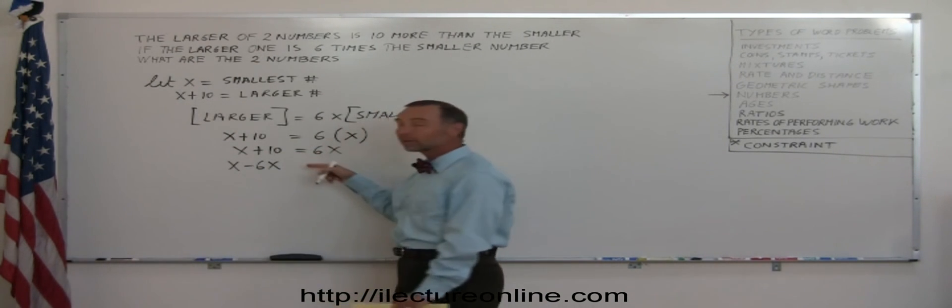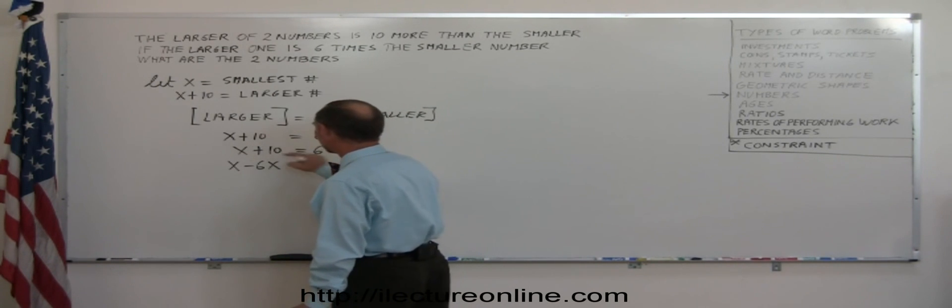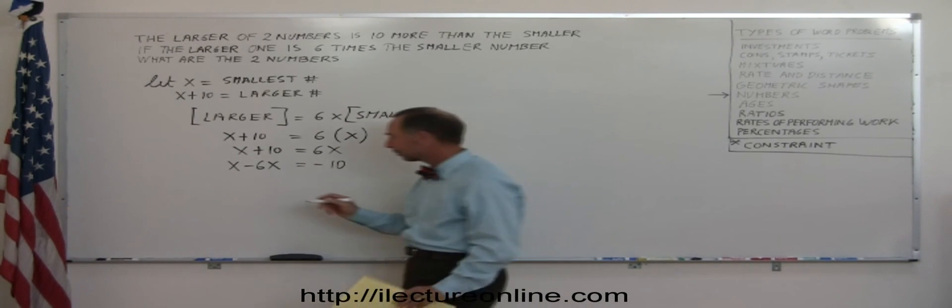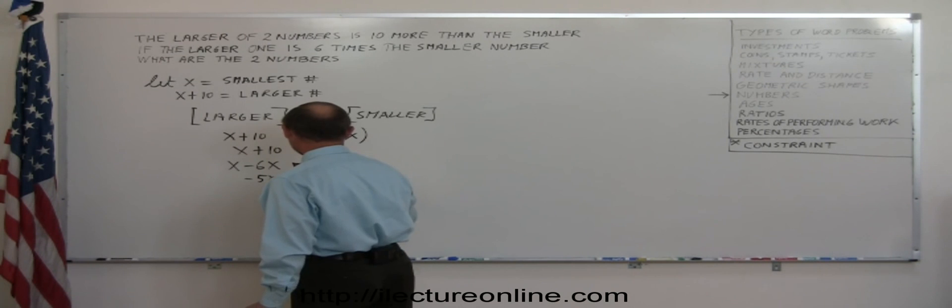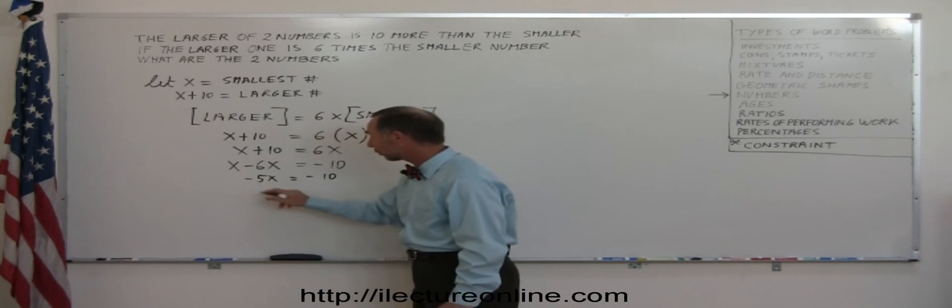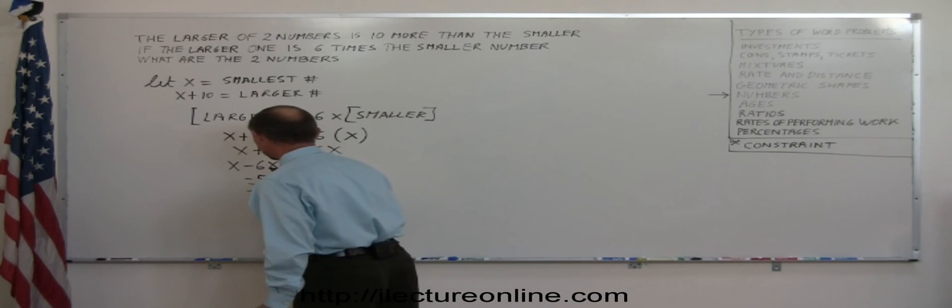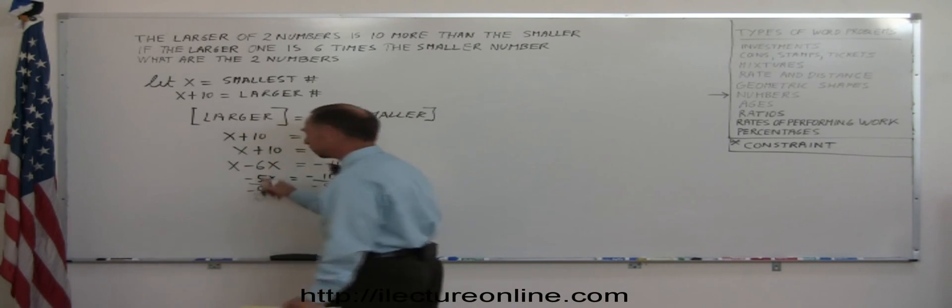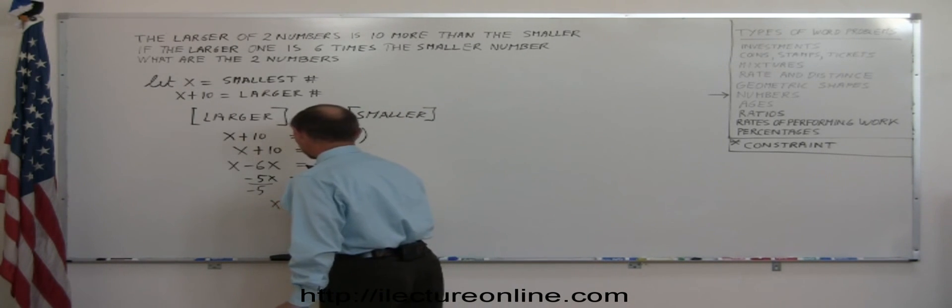Remember, whenever you cross over the equal sign, you get a negative sign. So instead of positive, it becomes negative. The ten goes to the other side, becomes minus ten. Now you combine like terms on both sides. x minus six x is minus five x equals minus ten. The last thing we do is divide both sides by the coefficient in front of x. That's the number in front of x. We call that the coefficient. So that cancels out, and we end up with x equals two.